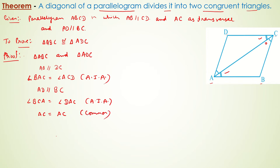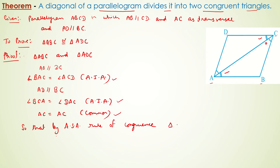We also have AC equal to AC, that is the common side. Therefore, by the Angle-Side-Angle (ASA) rule of congruence, triangle ABC is congruent to triangle ADC.